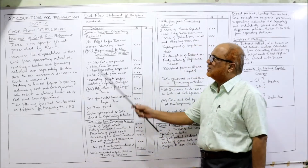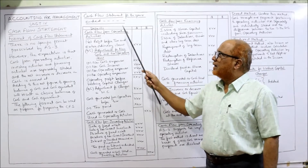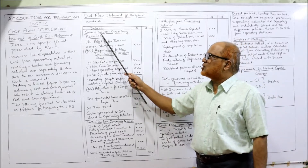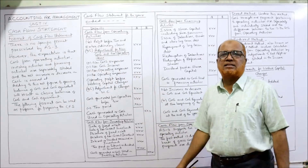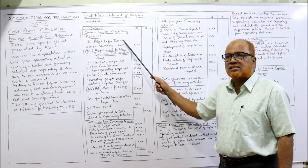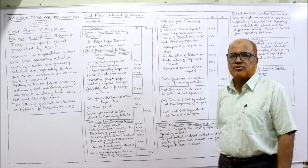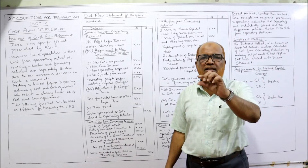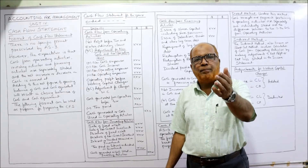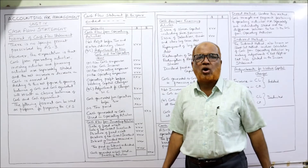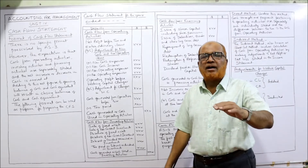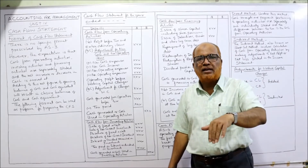The cash flow statement is headed 'Cash Flow Statement for the year ended' and uses two columns — an inner column and an outer column. Under cash flow from operating activities, the first item is net profit before tax and extraordinary items. You take the profit as per the profit and loss statement or income statement — before tax and before any extraordinary item — and place it in the inner column. Then you make adjustments.